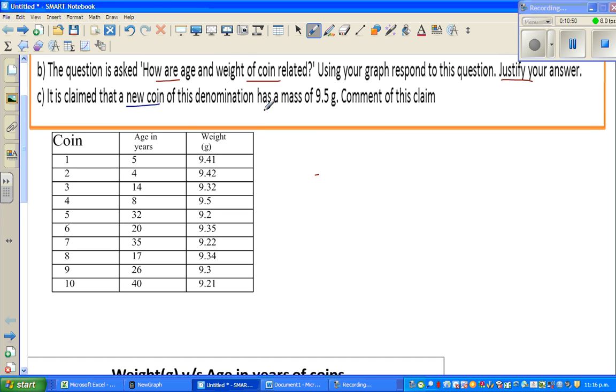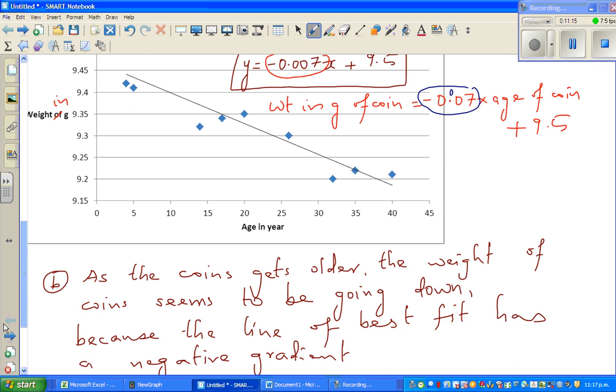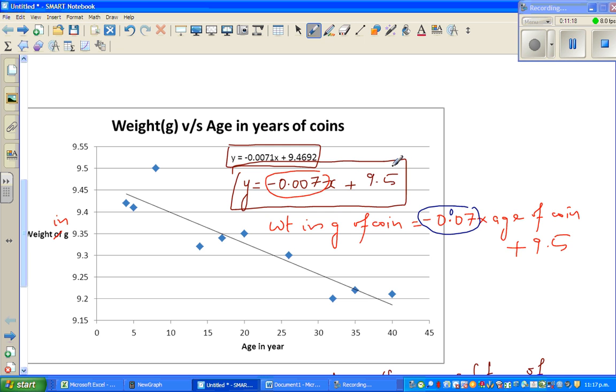Now it is claimed that a new coin, it has got zero years, fresh after from the minting, it is claimed that the coin of this denomination has a mass of 9.5 grams. Comment. So yeah, this is also a clear indication that your y-intercept. If you extend this line, suppose if you extend this line roughly nine point, so this is what we're saying is 9.46.